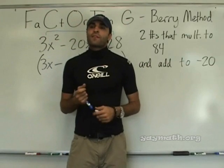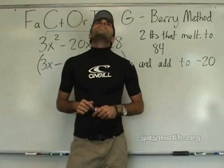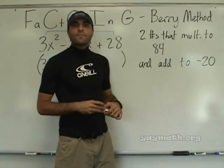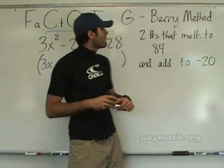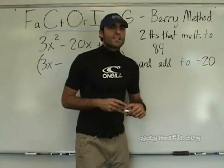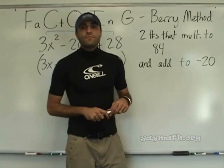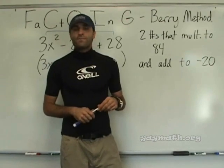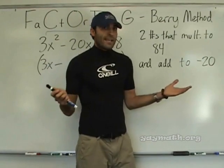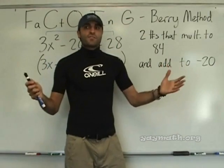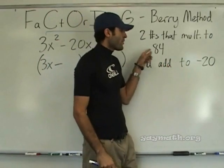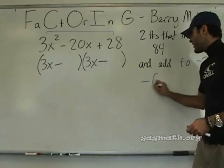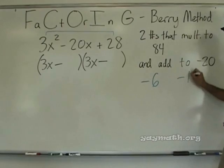I actually don't know right away — I'll have to think about it. Maybe you can help. Six times something? What's 84 divided by six? Fourteen. Six times fourteen — negative six, negative fourteen. We found the numbers that multiply to 84 and add to negative twenty. We can write them down: negative six, negative fourteen.